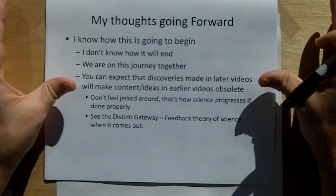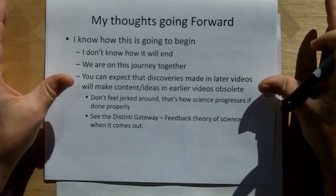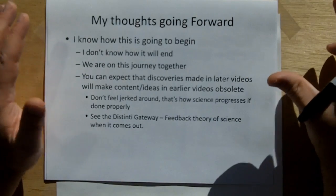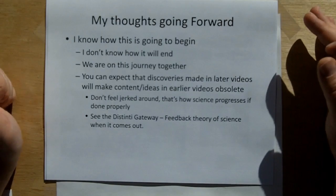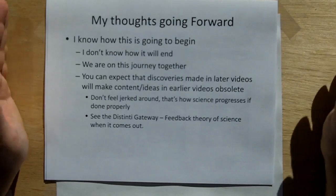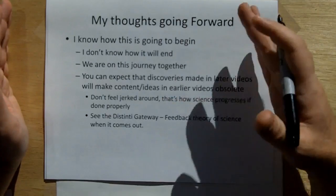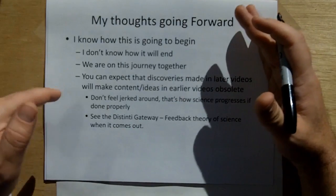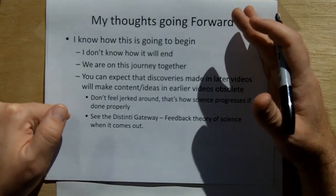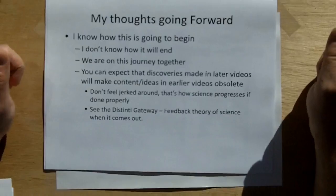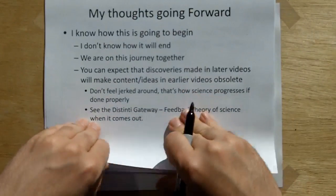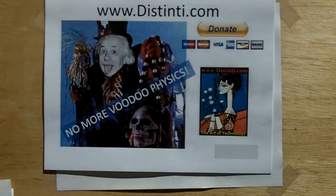But you can expect that as discoveries and observations are made in later videos, they will have the probability of making content or ideas in the early videos obsolete. Don't feel jerked around. That's just how science progresses if it's done properly. As we learn more, we're like, oh gee, that contradicts what we know here, so we've got to come up with a better way to explain this so these things aren't in contradiction with each other. Again, reference to Distinty Gateway Feedback Theory.